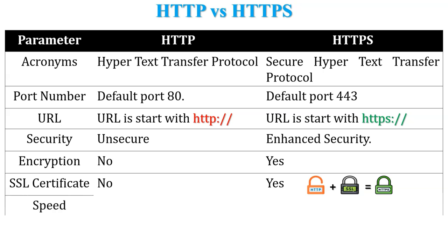The next parameter is speed. HTTP is faster than HTTPS because it does not support data encryption. HTTPS is slower than HTTP because it takes some time to encrypt the data.